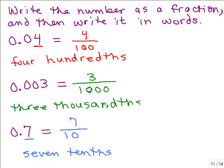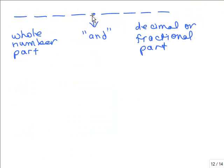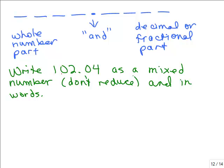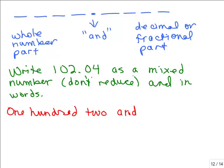When you have a number in front of the decimal point, that's the whole number part. After the decimal point is the decimal or fractional part — the part between 0 and 1. Where the decimal point is, we always read that as the word "and." When we did place values with whole numbers, we did not use the word "and" — it's reserved for when you have a whole part and a fractional or decimal part.